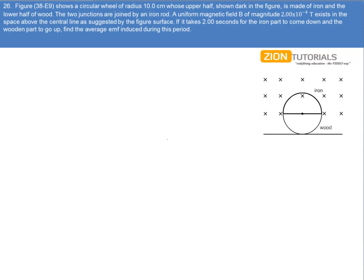We have a circular wheel of radius 10 cm whose upper half is made of iron and the lower half is made of wood. The two junctions are joined by an iron rod.